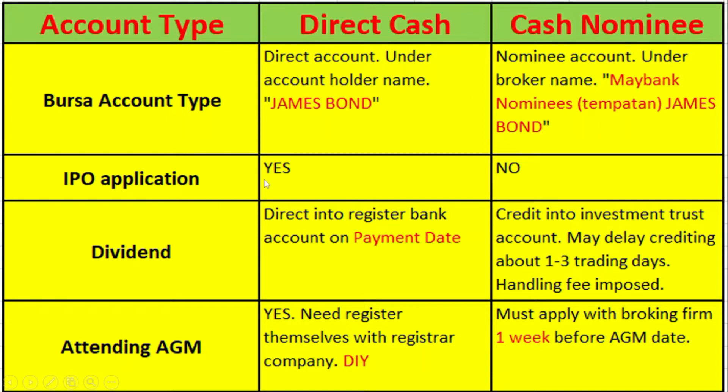In terms of attending annual general meetings, direct cash account holders can attend the AGM directly. If they are going for a virtual AGM, they need to register themselves with the registrar company. For cash nominee investors, they need to notify the investment officer for the application of proxies at least one week before the AGM date.